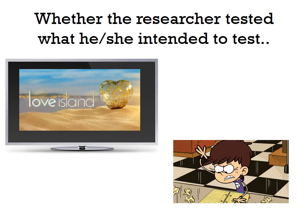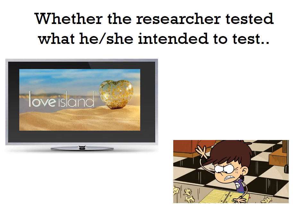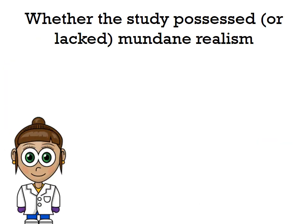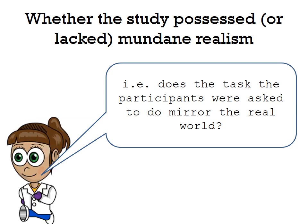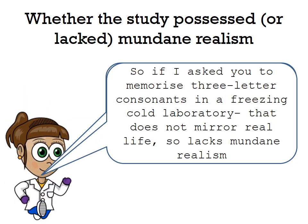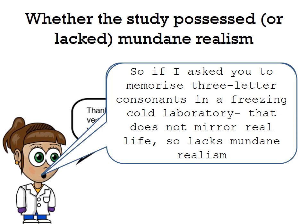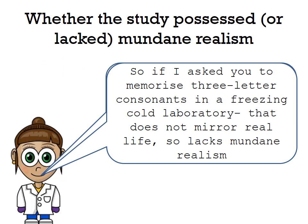Another thing affecting internal validity is whether the researcher tested what they intended to test. For example, if you wanted to find out whether watching TV affects homework quality, you can't be certain you're testing TV-watching just by having the TV on — the person may not actually be watching it. Internal validity is also affected by mundane realism: does the task participants were asked to do mirror the real world? Asking someone to memorize three-letter consonants in a freezing cold lab does not mirror real life, so that experiment would lack mundane realism.